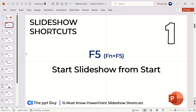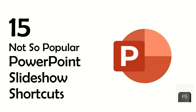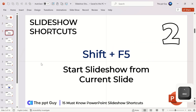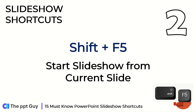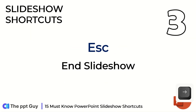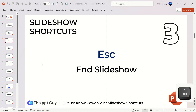Number 1 is F5 or Function F5, which will start the slideshow from the start or the first slide. Number 2 shortcut is Shift F5, which will start the slideshow from the current slide. Shortcut number 3 is Escape, which will exit the slideshow to your PowerPoint window.